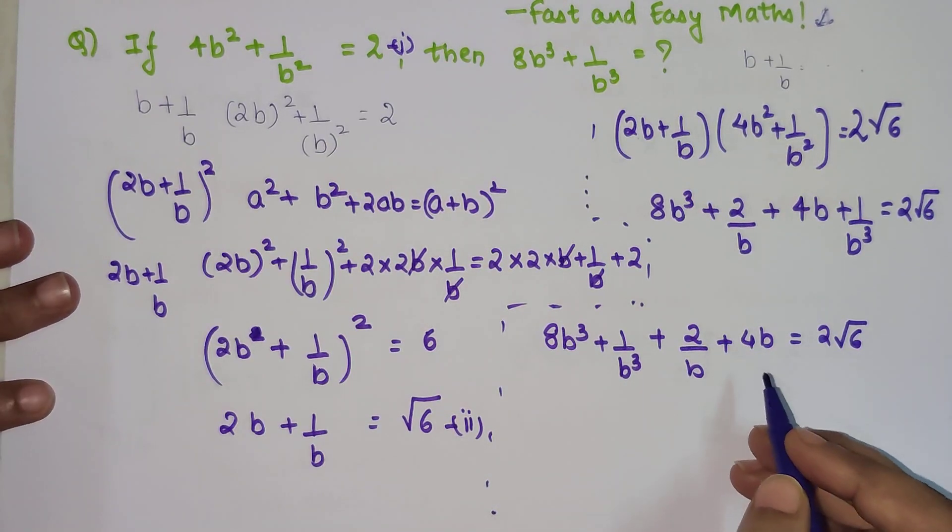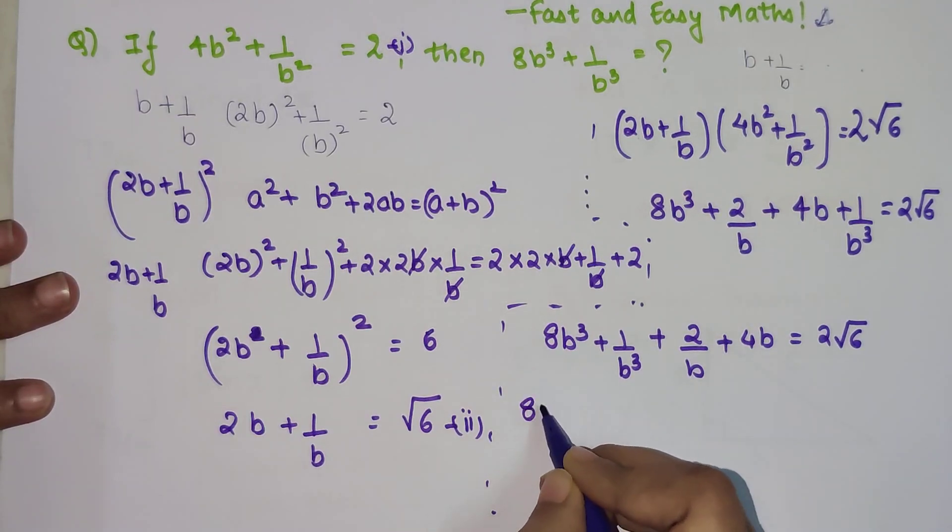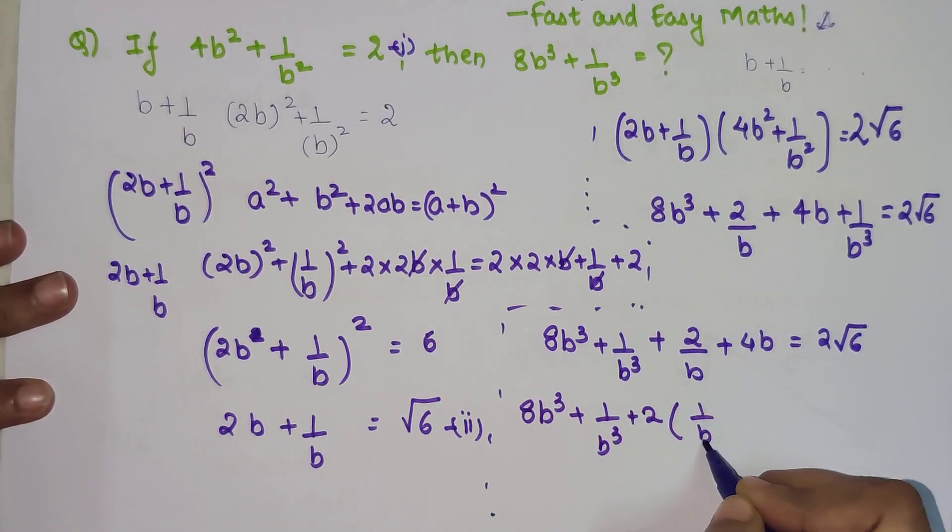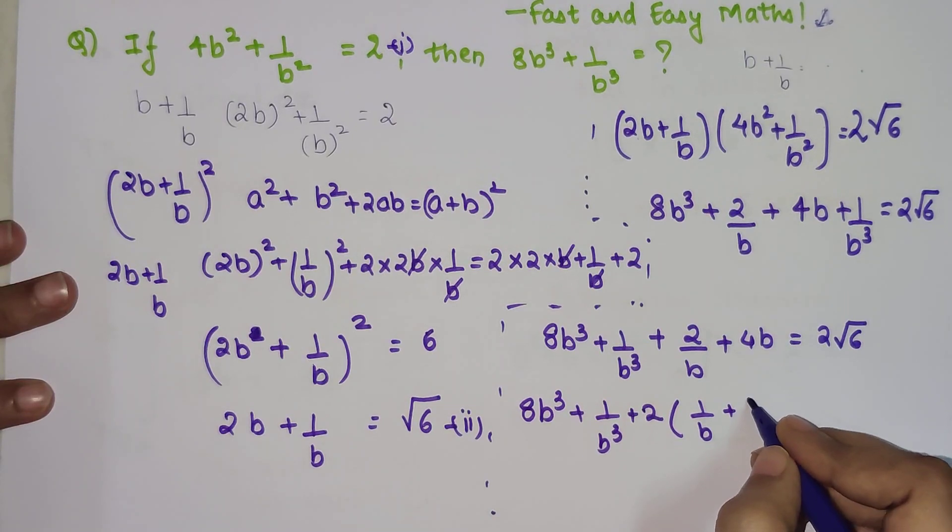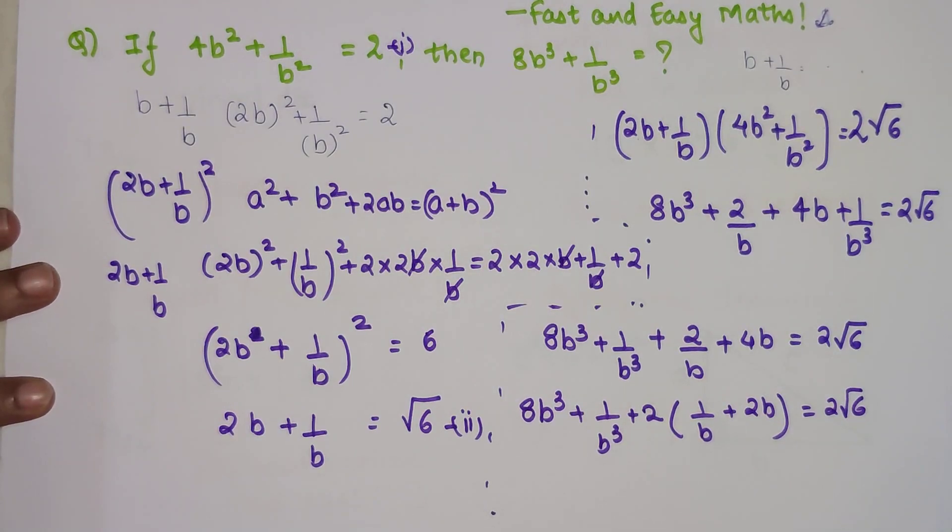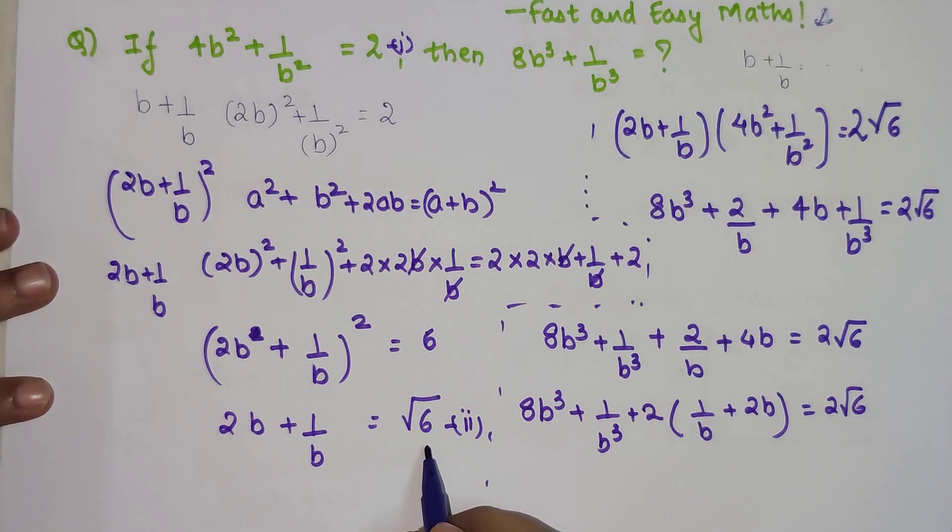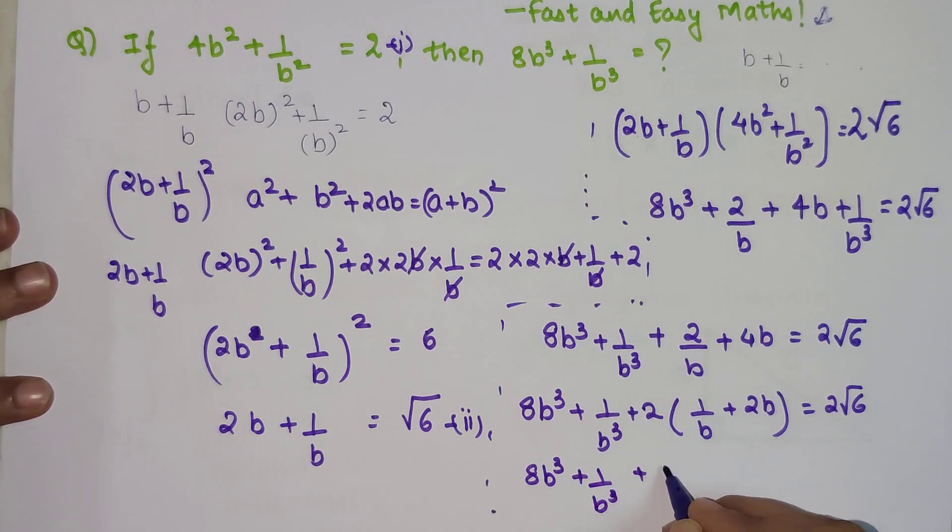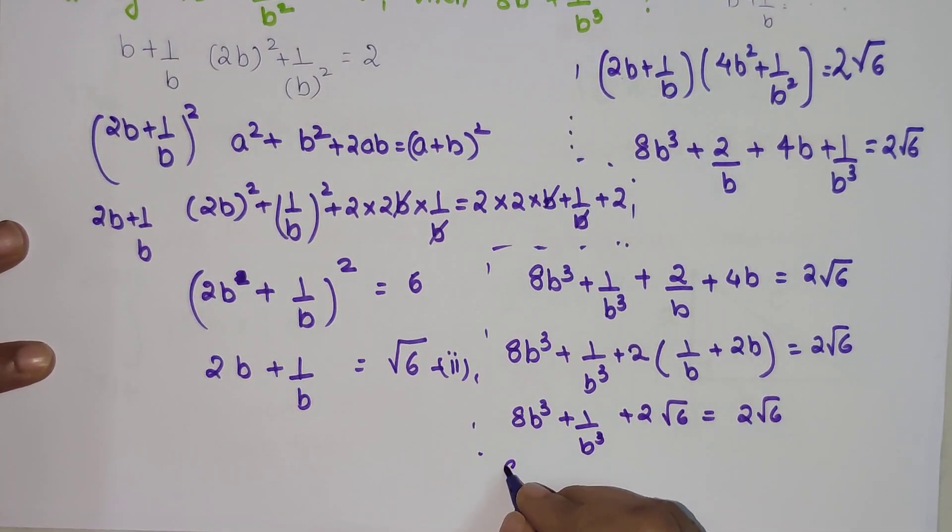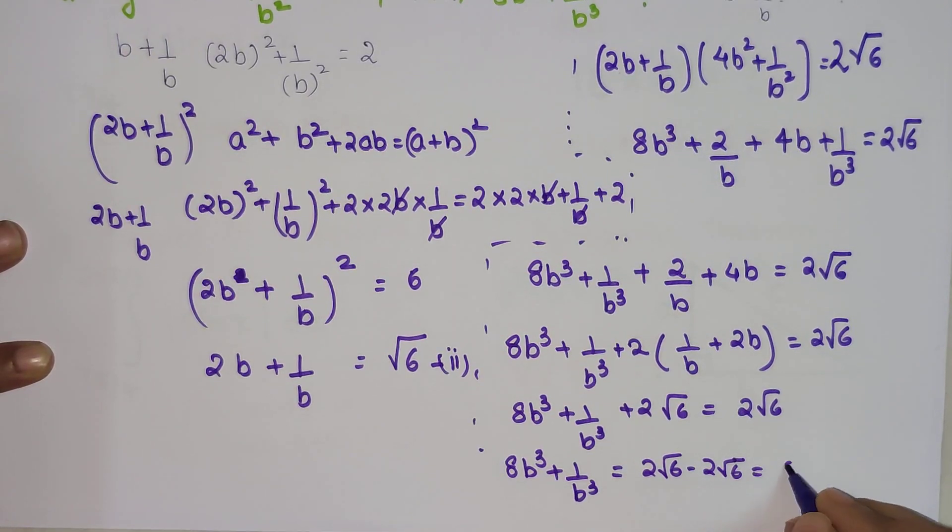So now let's try and take something common. If you take 2 common out of this we will get 1/b + 2b, and we know that this value is nothing but √6. So I have 8b³ + 1/b³ + 2 × √6 = 2√6. Taking the 2√6 on the other side it will get cancelled. 2√6 - 2√6, so my answer is 0.